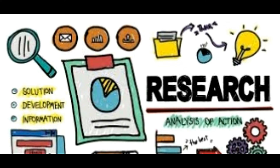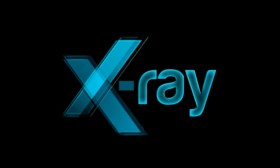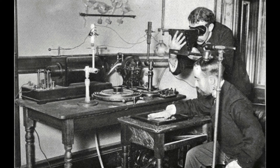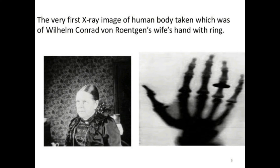After two months of his initial discovery, he published a paper. In this paper, he mentioned the new ray with the variable X. The name stuck as X-ray. Many of his colleagues suggested calling it the Röntgen ray. Röntgen also discovered the medical use of X-ray. The photograph of his wife's hand is the first photograph of a human body part using X-ray.